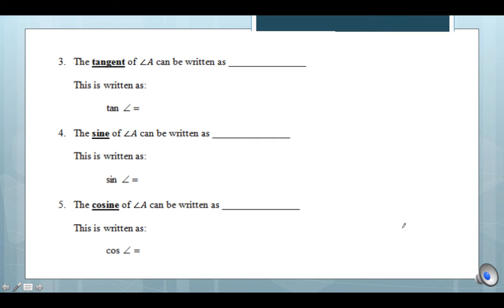All right, so let's talk about some of our abbreviations. The tangent of angle A can be written as tan angle A. Sine of angle A can be written as S-I-N angle A. And the abbreviation for cosine would be C-O-S of angle A. So those are how we'll abbreviate our ratios and how you'll see it on your calculator as well.